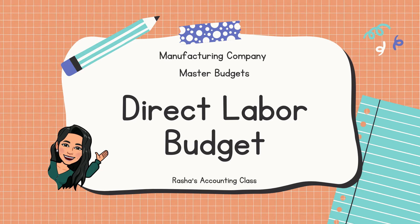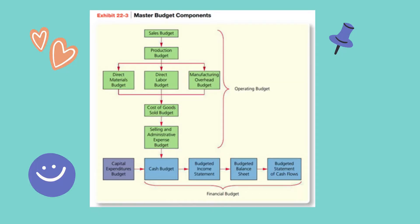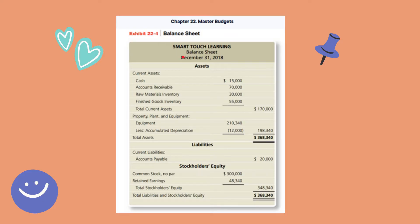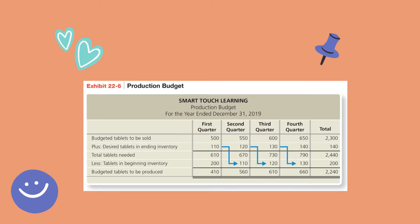Today we're going to do the direct labor budget for a manufacturing company's master budget. The master budget has operating budgets and financial budgets, and we are still in the operating budgets. The direct labor budget depends on the production budget. This is the balance sheet at the end of 2018, which will be the beginning for 2019. Since the direct labor budget depends on the production budget, we need the budgeted tablets to be produced.